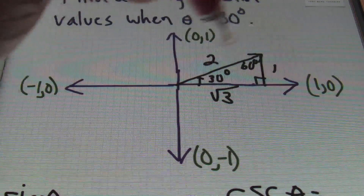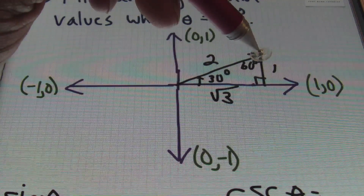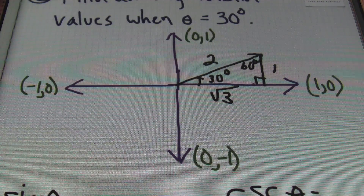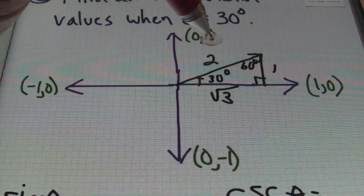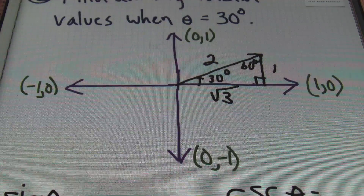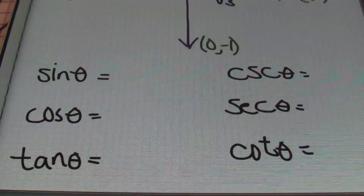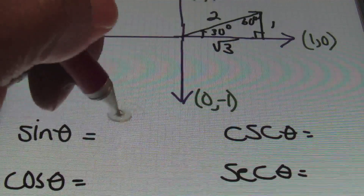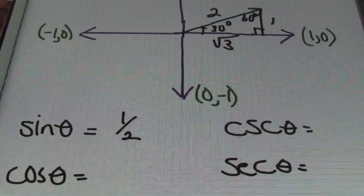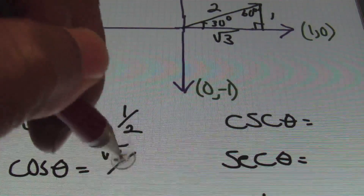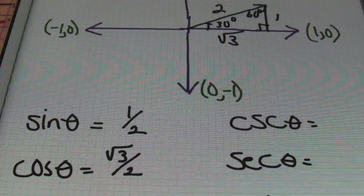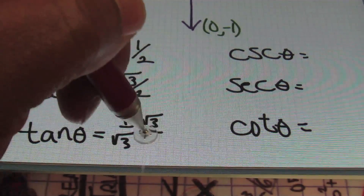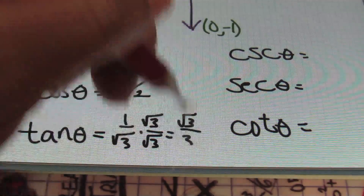Make sure that your signs are correct based on the quadrant. I know that my x and y values have to be positive because this lies in the first quadrant, and the hypotenuse will always be positive, so I have a positive 2 there. Using these three values as x, y, and r — or opposite, adjacent, and hypotenuse — we can solve for all six trig values. Sine theta is going to be the y value over the r value, so I end up with 1 over 2. The cosine value is x over r, so that would be square root of 3 over 2. Then my tan value is y over x, so that would give me 1 over the square root of 3, and I'll need to rationalize that to get rid of that radical in the denominator, ending up with square root of 3 over 3.